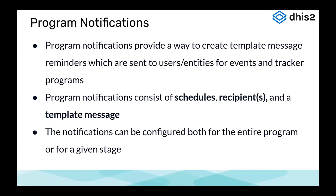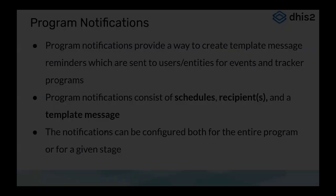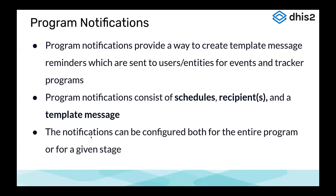The definition of a program notification is that they provide a way to create template message reminders sent to users or entities for events and tracker programs. Program notifications consist broadly of schedules, recipients, and a template message. Notifications can be configured for the entire program or for a given stage — for example, one notification sent at enrollment, and further notifications sent when an event is completed or by other conditions through program rules.